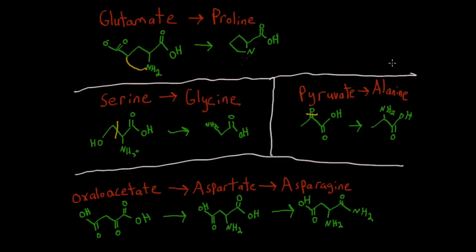Finally, oxaloacetate to aspartate to asparagine works similarly to the glutamate transformation: we take oxaloacetate, add a nitrogen group to replace the ketone to get aspartate, and then add another amine group to go from aspartate to asparagine. These are all the interconversions you're likely to see. You won't be tested on the structures themselves, but understanding how the structures change helps you remember the interconversions. There are many mnemonics out there, but the best approach is to create your own.